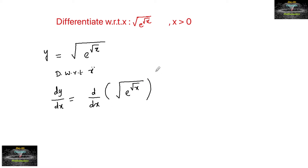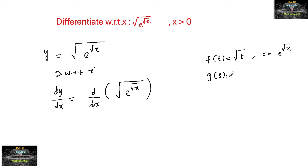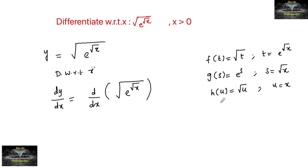Here it's a composition of different functions. First, f(t) = √t, where t = e^(√x). Next, g(s) = e^s, where s = √x. Third, h(u) = √u, where u = x. And finally φ(x) = x. So it's a composition of four different functions.